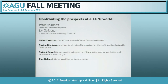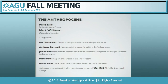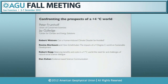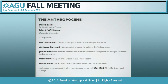My name is Mike Ellis. My co-convener for this first part of this session is Mark Williams, who is sitting beside me. As you've seen from the rotating slides here, we are merged with another session that is cognate — two hours — confronting the prospects of a four-degree world. The conveners of that are Peter Frumhoff and Jay Gulledge. I'm going to introduce the first speaker, Jay Zelasevich, who will talk on the temporal and spatial scales of an Anthropocene series.